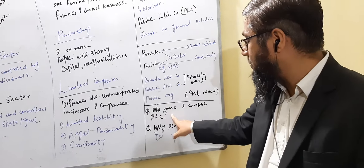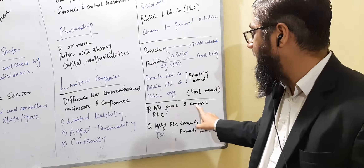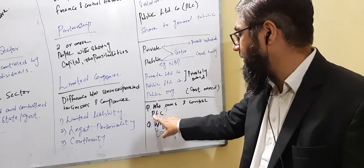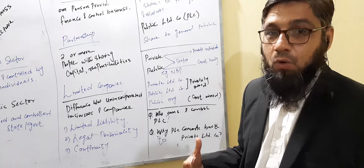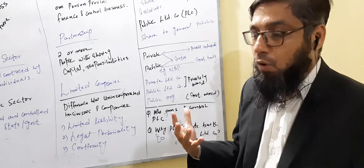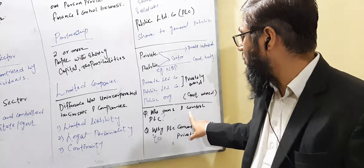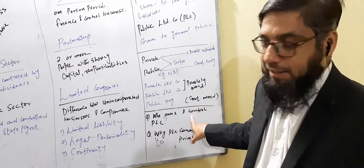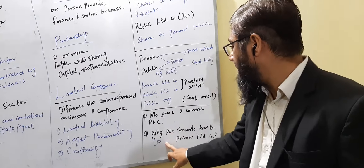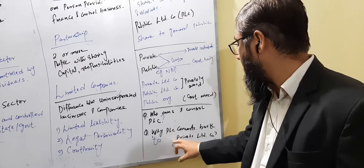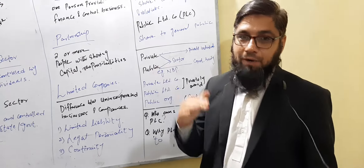Let's discuss: who owns and controls a public limited company? The owners are the shareholders, and it is controlled by the board of directors. So you should not get confused on this point. Another question to consider is: why would a public limited company convert back to a private limited company?